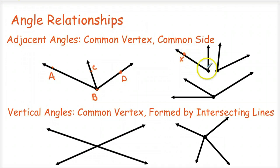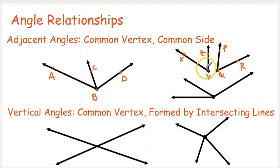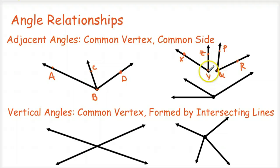Over here, if I call this angle XYZ and this angle PQR, these are not adjacent. They are kind of located next to each other, but they don't share a common vertex and a common side. The vertex of this angle is Y, the vertex of this angle is Q, so there's no common vertex there.